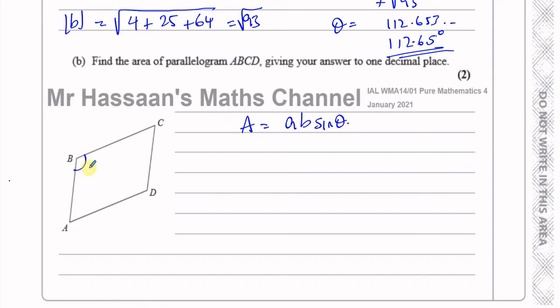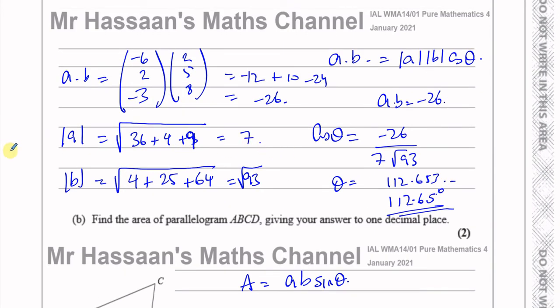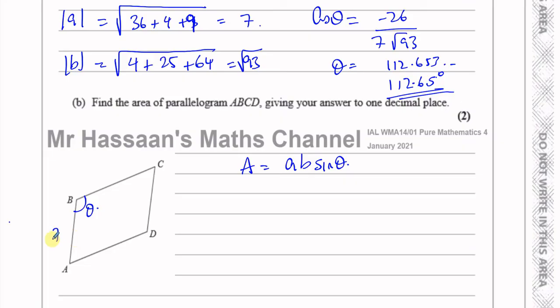So we know this angle is theta, we know the length of AB is seven, and we know the length of BC is the root of 93. So I have enough information to find the area because I also know the angle is 112.65.